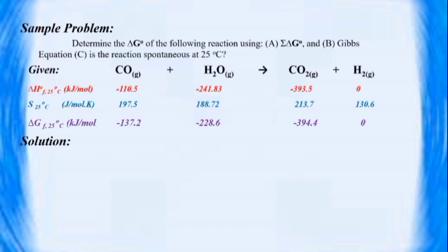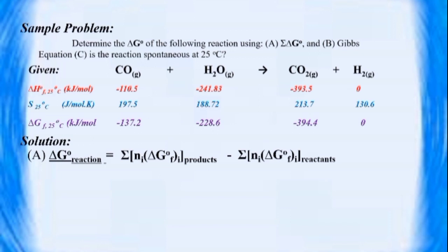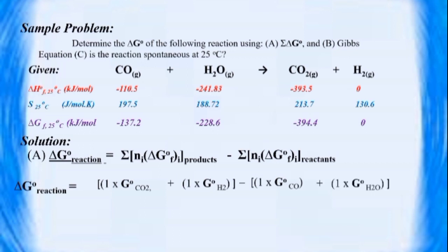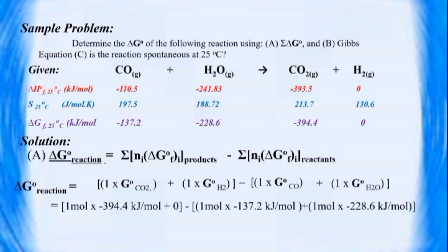Using the summation of free energy changes — summation of products minus summation of reactants — the change in free energy of the reaction equals (1 × ΔGf° of CO₂) plus (1 × ΔGf° of H₂) minus (1 × ΔGf° of CO) plus (1 × ΔGf° of H₂O). By substituting the values and canceling all mole units, we get negative 28.6 kJ as the free energy change of the reaction.